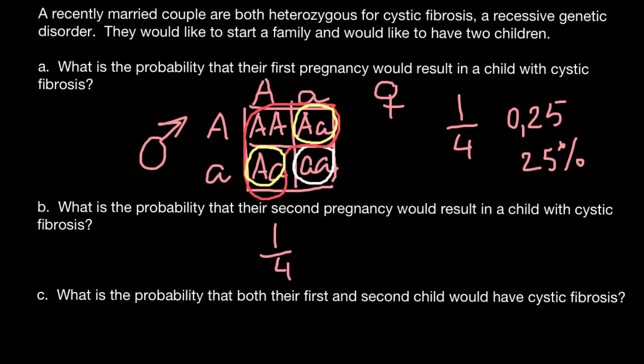Question C: what is the probability that both the first and second child would have cystic fibrosis? The probability that the first child would have this genetic disorder is one fourth, and the probability that the second child would have this genetic disorder is also one out of four. These are two independent events, so we have to use the rule of multiplication. The probability that this family would have two children in a row with this genetic disorder would be one sixteenth.